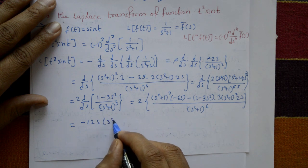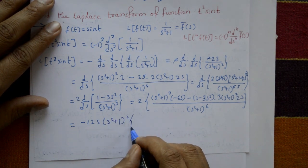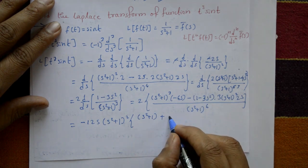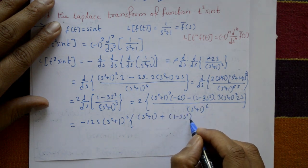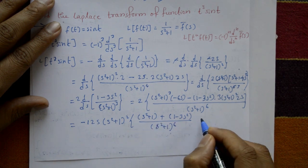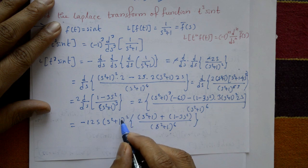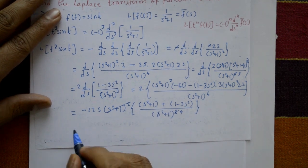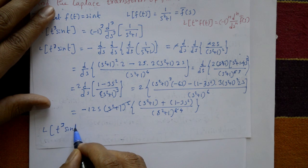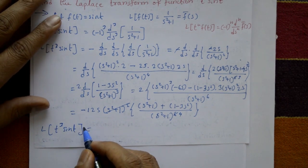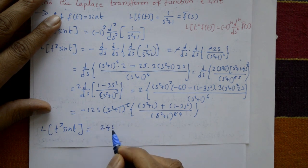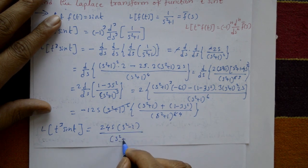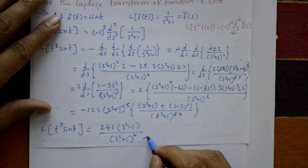Taking (s²+1)² as a common factor outside and simplifying, we get 2·(-6s)·[(s²+1) + (1 - 3s²)] divided by (s²+1)⁴. This simplifies to give the final answer: L{t³·sin(t)} = 24s(s²-1)/(s²+1)⁴. This is the required solution.